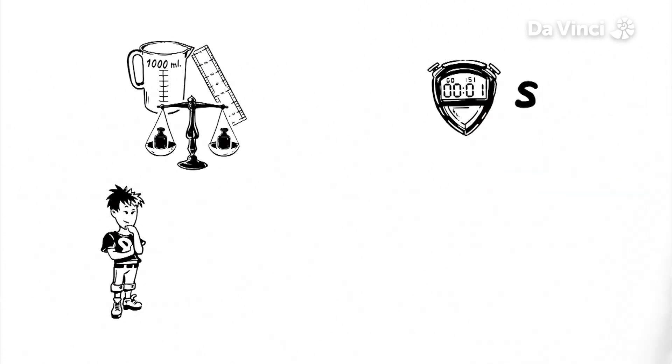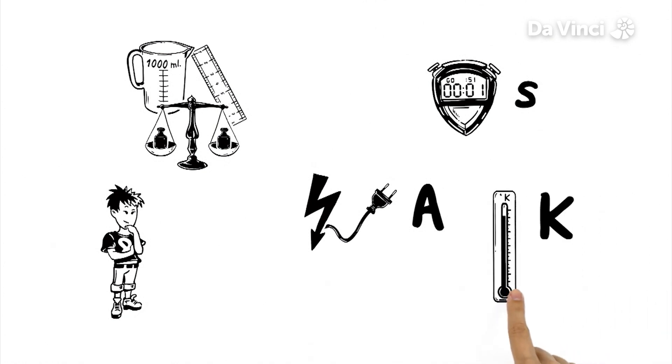And the metric system's not just limited to weights and measurements. It also includes seconds for timing, amperes to measure electrical currents and kelvin for temperature.